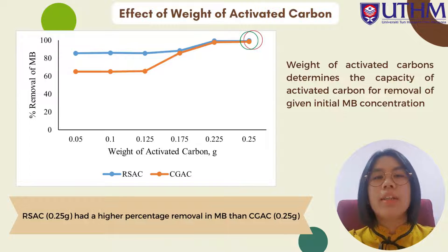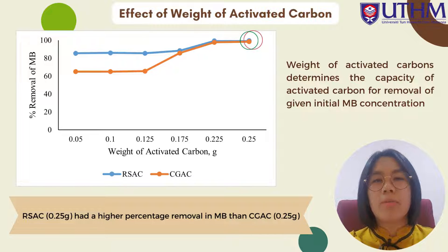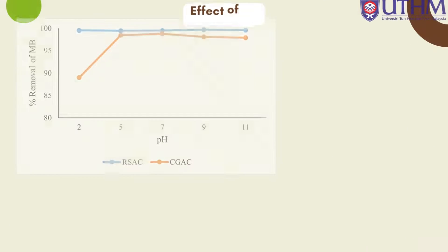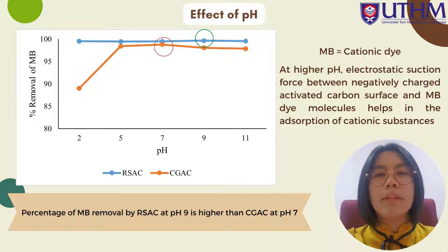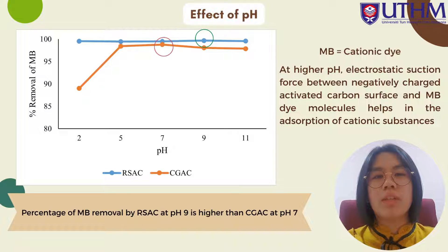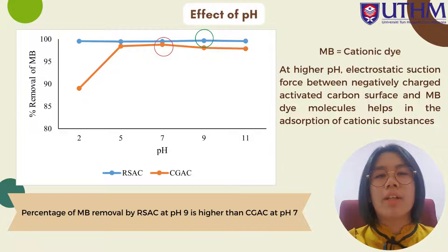Followed by the results for the effect of adsorbent dose, also known as the weight of activated carbon. The weight of activated carbon determines the capacity of activated carbon for the removal of a given initial concentration of Methylene Blue. With increasing availability of more active sites of activated carbon to remove Methylene Blue, the higher the percentage removal. In this experiment, the percentage of Methylene Blue removal by 0.25 g of rice straw activated carbon is higher than by 0.25 g of Citronella grass activated carbon. For the effect of pH on Methylene Blue removal: Methylene Blue are positively charged particles, also known as cationic dyes. At a higher pH, the electrostatic attraction force between the negatively charged activated carbon surface and Methylene Blue dye molecules helps in the adsorption of cationic substances. The percentage of Methylene Blue removal by rice straw activated carbon at pH 9 is higher than Citronella grass activated carbon at pH 7.